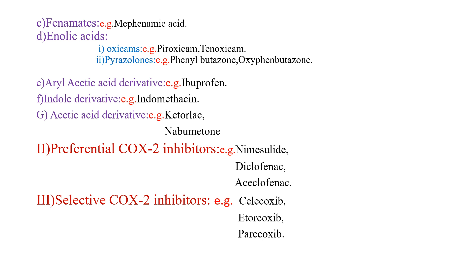Second: Preferential COX-2 inhibitors, e.g., nimesulide, diclofenac, aceclofenac. Third: Selective COX-2 inhibitors, e.g., celecoxib, etoricoxib, and parecoxib.